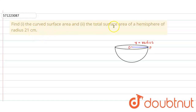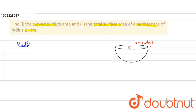In this question, a hemisphere is given whose radius is equal to 21 centimeters, and we have to find the curved surface area and the total surface area of the hemisphere. The radius is given as 21 centimeters. In the first part, we have to find the curved surface area.